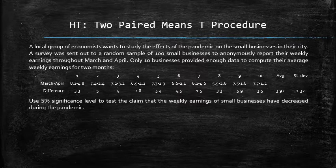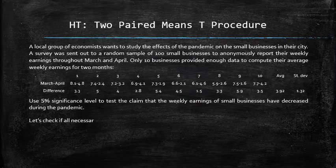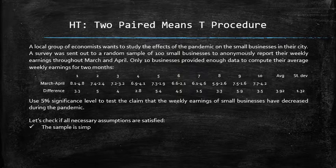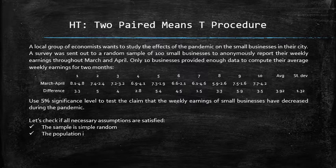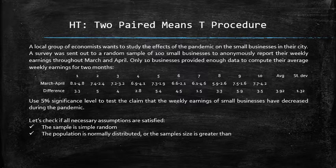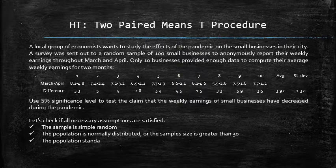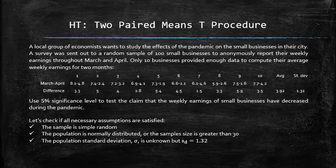Before we begin the two-paired means t procedure, let's check if all necessary assumptions are satisfied. The sample must be assumed simple random; if not, the results of the test are invalid. The central limit theorem must be applicable, so either the population must be normal or the sample size must be greater than 30. In our case the sample size is less than 30, so we must assume that the population of differences is normally distributed. The population standard deviation must be unknown, but we can use the sample standard deviation instead.